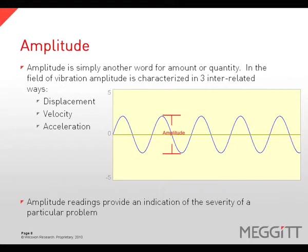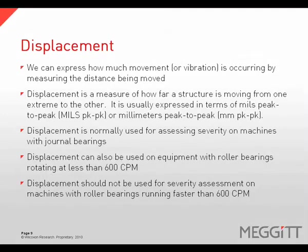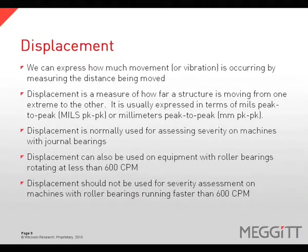The amplitude readings provide an indication of severity for a particular problem. We can express how much movement or vibration is occurring by measuring the distance being moved, or displacement. Displacement is a measure of how far the structure is moving from one extreme to the other, usually expressed in terms of mils peak to peak. Displacement is normally used for assessing severity on machines with journal bearings, and can also be used on equipment with roller element bearings rotating at less than 600 cycles per minute. Displacement should not be used for severity assessment on machines with roller element bearings running faster than 600 cpm.